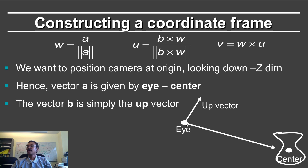We want to position the camera at the origin looking down the minus z direction. In OpenGL, you always have a camera at the origin looking at 0, 0, minus 1. So it's looking at the minus z direction.